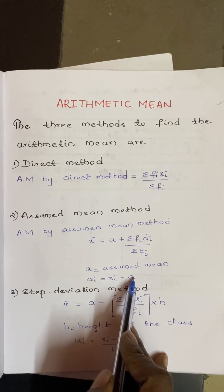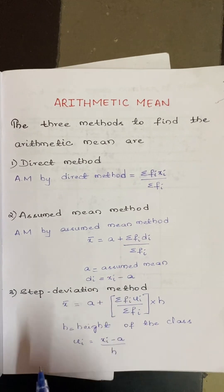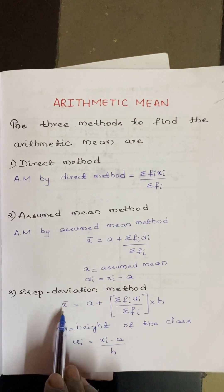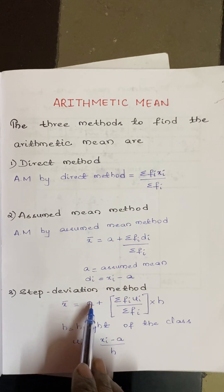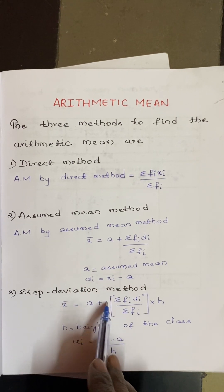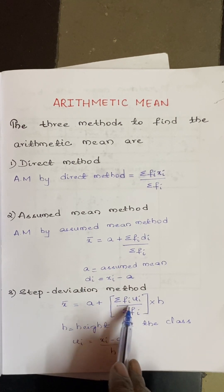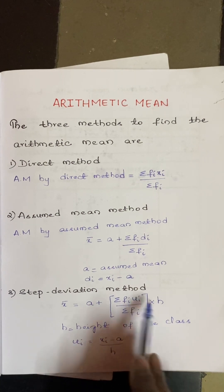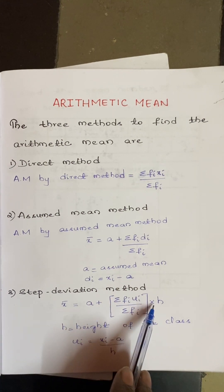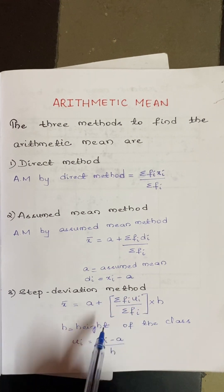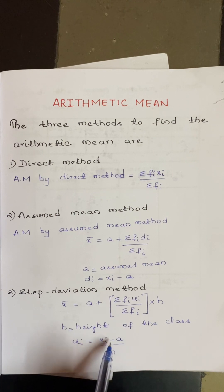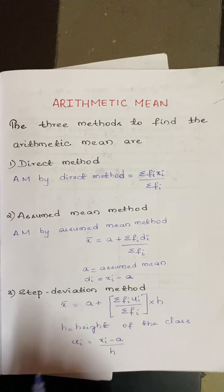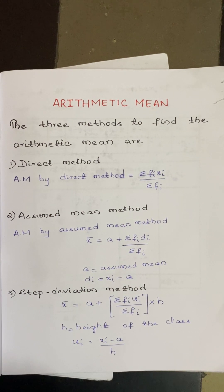The third method is the step deviation method: x̄ = a + (Σfi·ui / Σfi) × h, where h is the class width and ui = (xi − a) / h. These are the three different methods for finding the arithmetic mean.